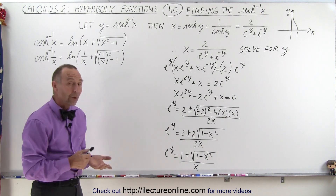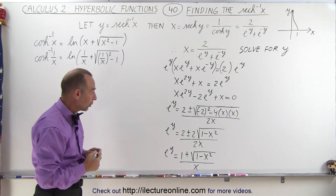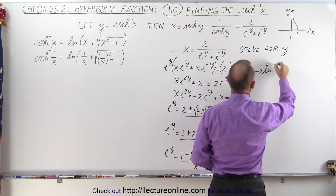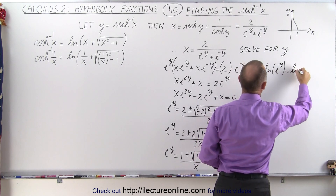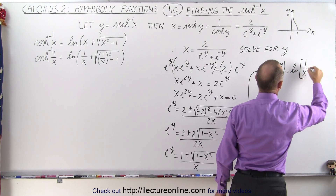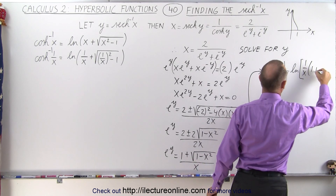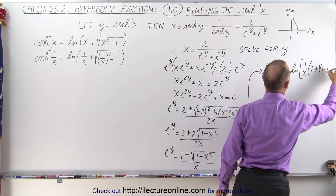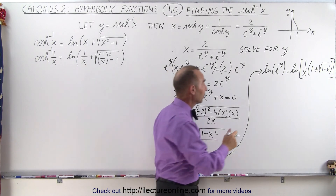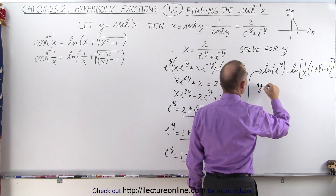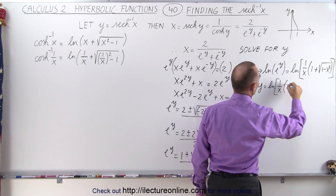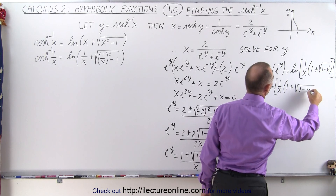Next, we still need to get rid of the E to the Y component — we want just Y — so we're going to take the natural log of both sides. When we take the natural log of E to the Y, that equals the natural log of what we have on the right side, which is going to be 1 over X times 1 plus the square root of 1 minus X squared. The natural log of E to the Y is simply Y.